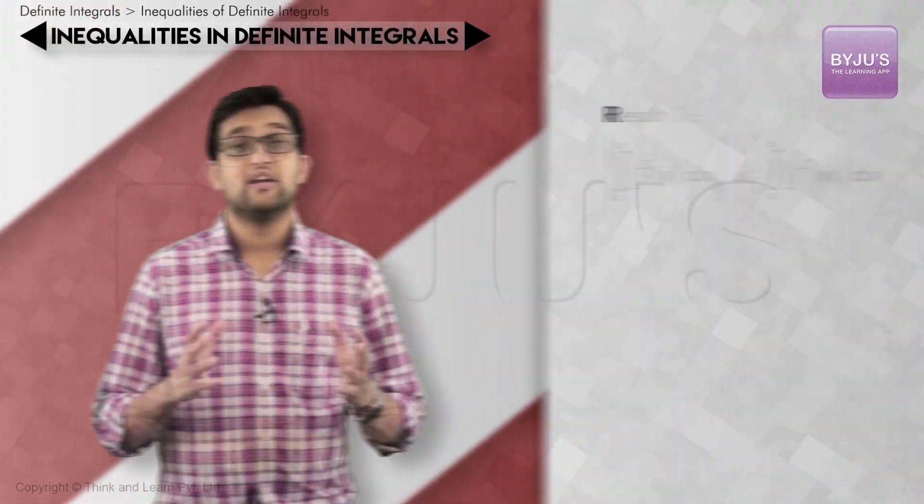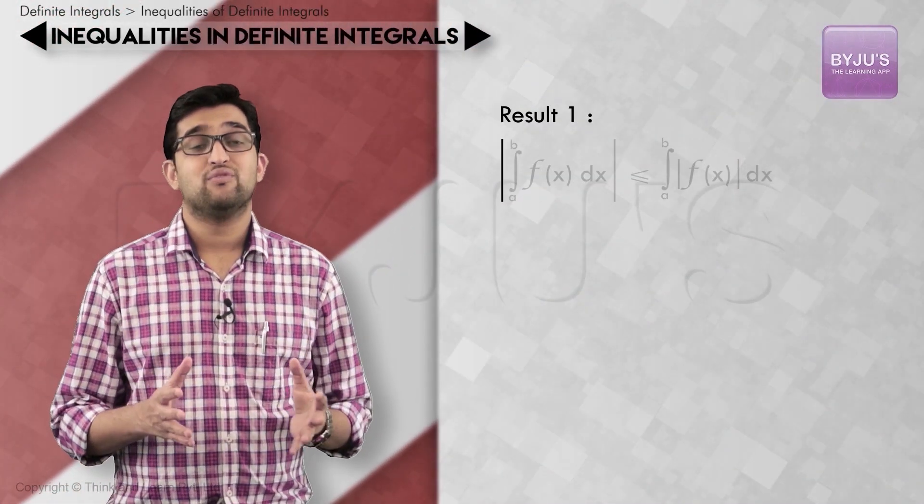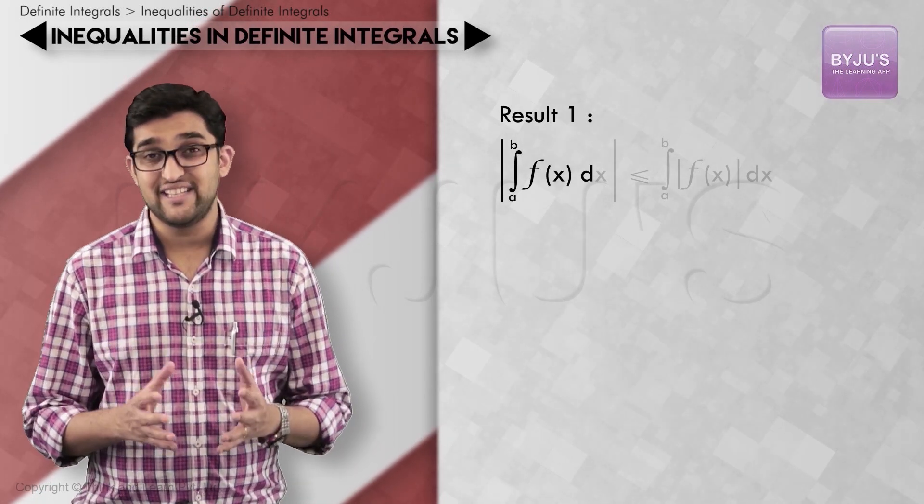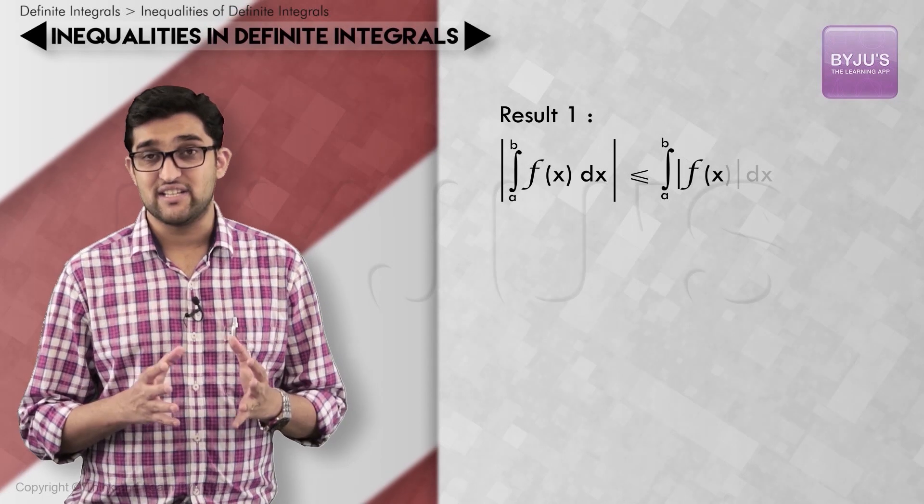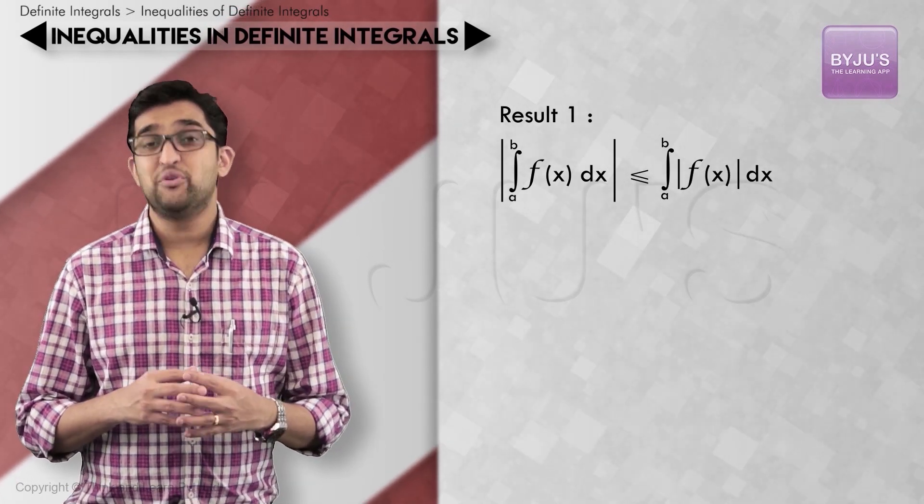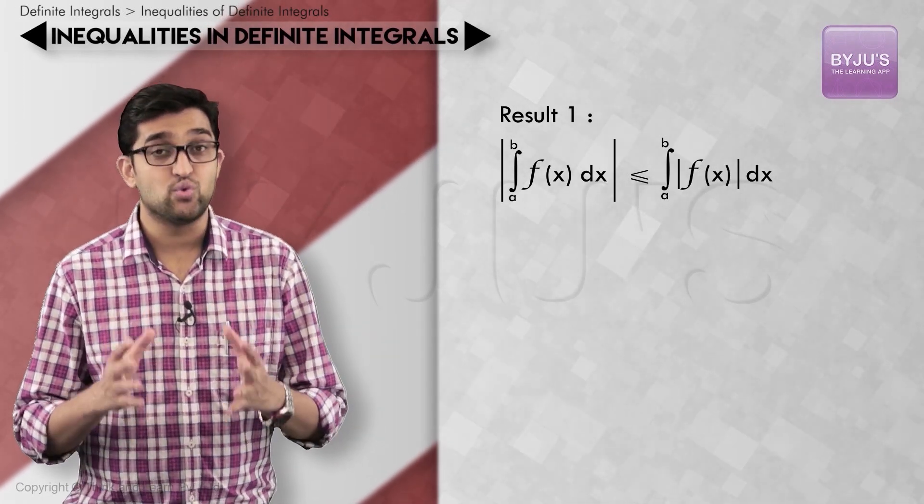Result 1: modulus of integral a to b f(x) dx is less than or equal to integral a to b modulus f(x) dx. You can see why this result is true from the area interpretation.